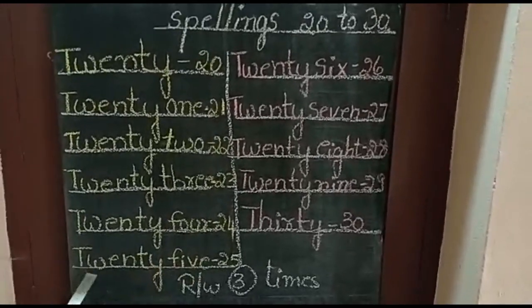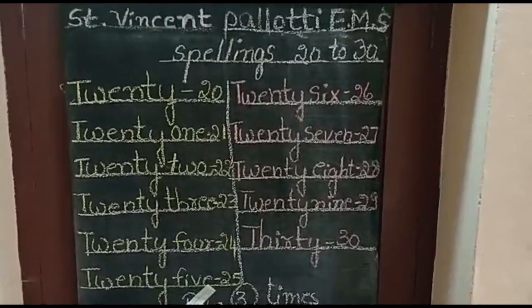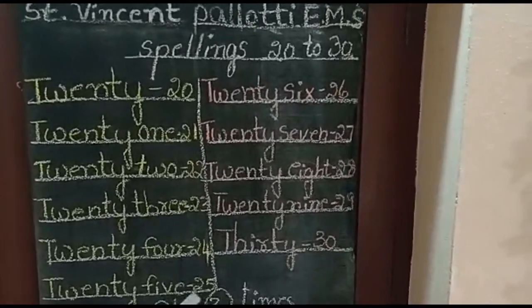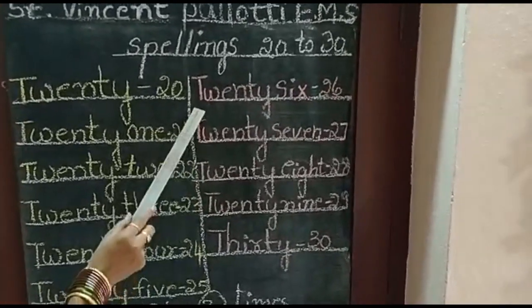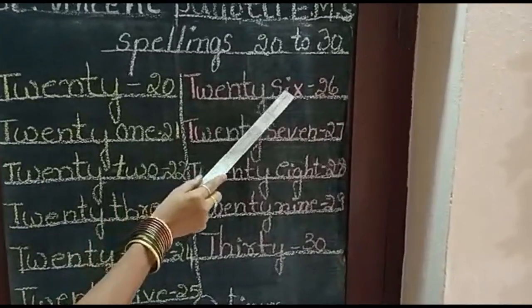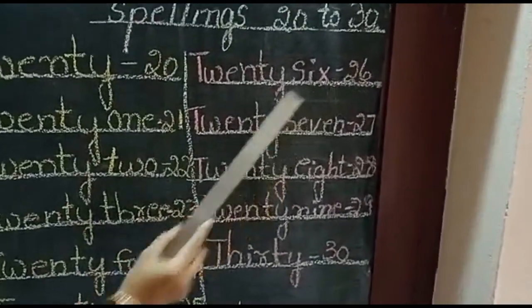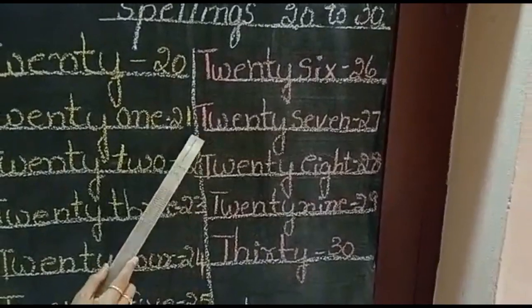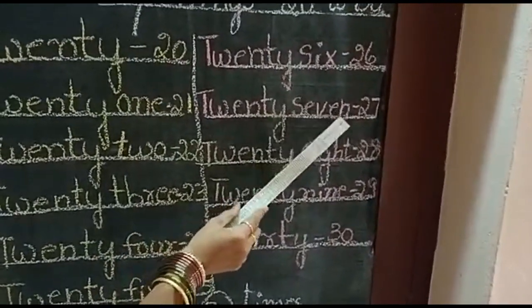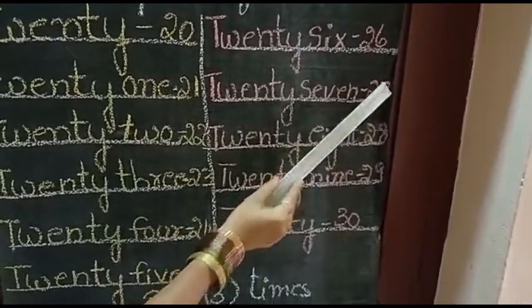T-W-E-N-T-Y F-I-V-E, 25. 2-5, 25. T-W-E-N-T-Y S-I-X, 26. 2-6, 26. T-W-E-N-T-Y S-E-V-E-N, 27. 2-7, 27.